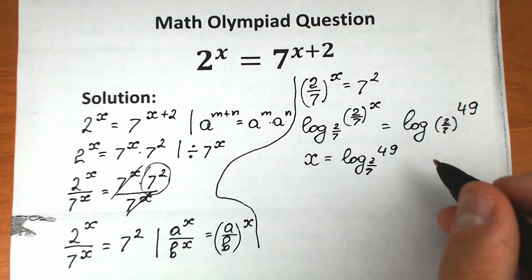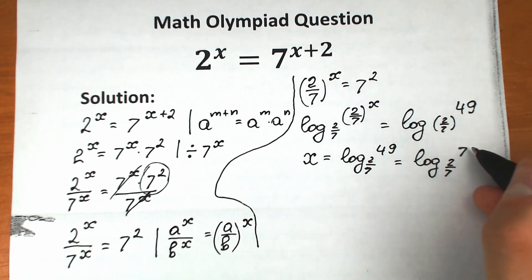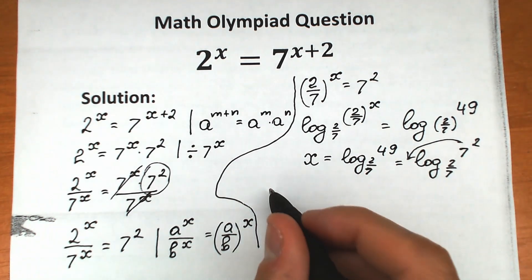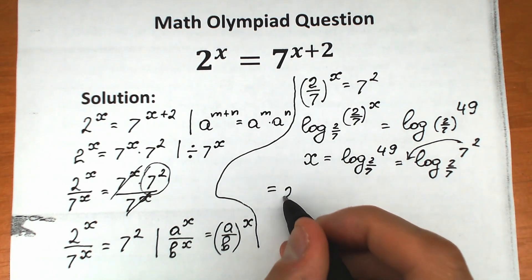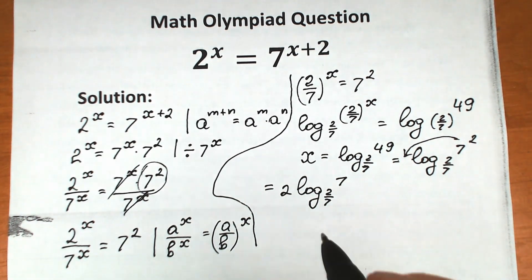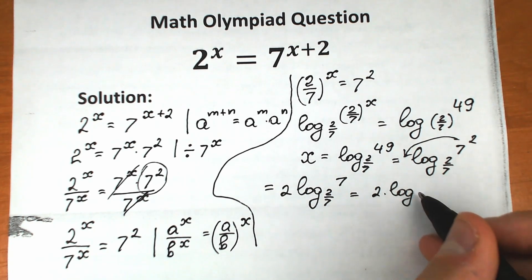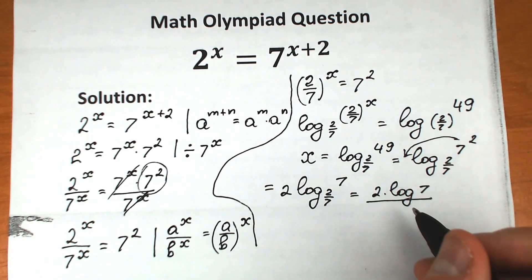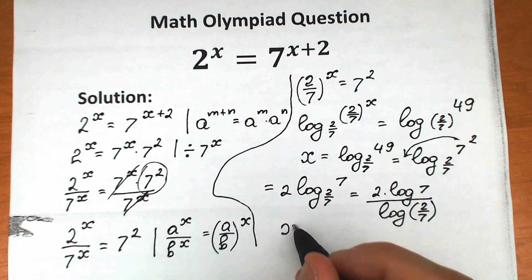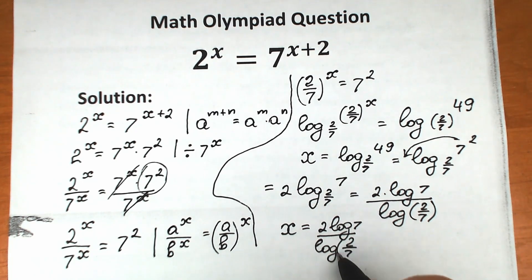Let's simplify further. We write 49 as 7 squared, so we have log base (2/7) of 7 squared. The exponent 2 comes out in front, giving us 2 times log base (2/7) of 7. Applying the change-of-base property, we can write this as 2 times log 7 divided by log(2/7). So our final answer is x equals 2 log 7 over log(2/7).